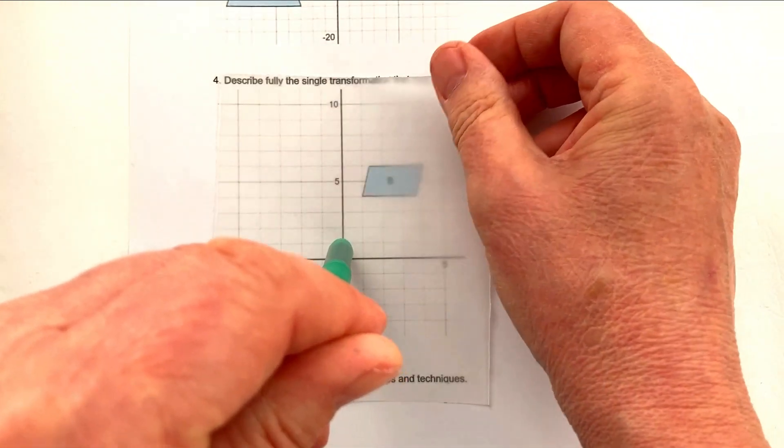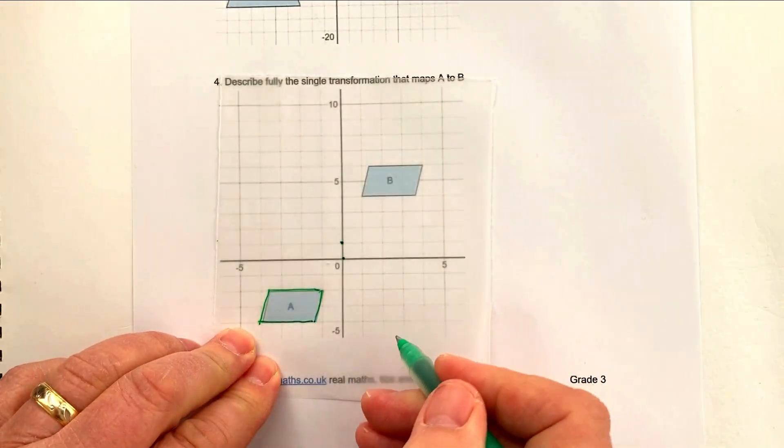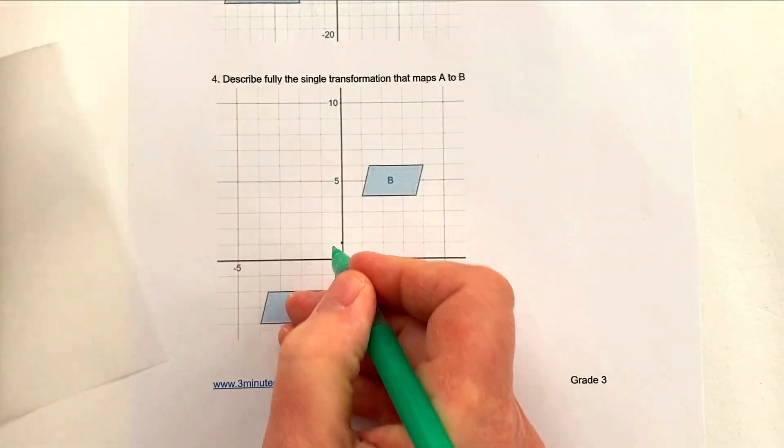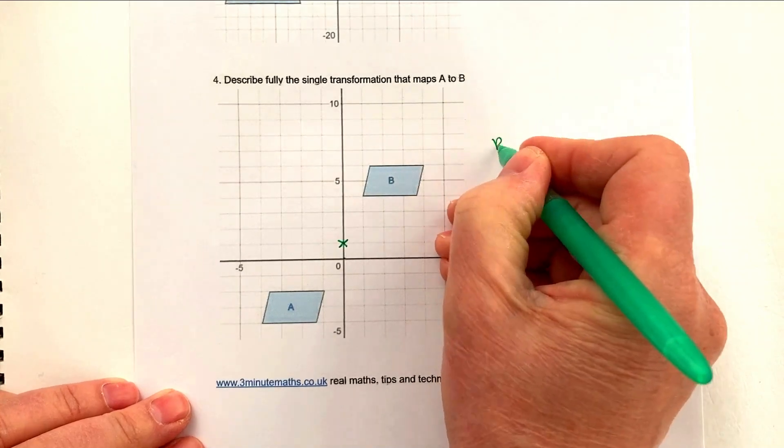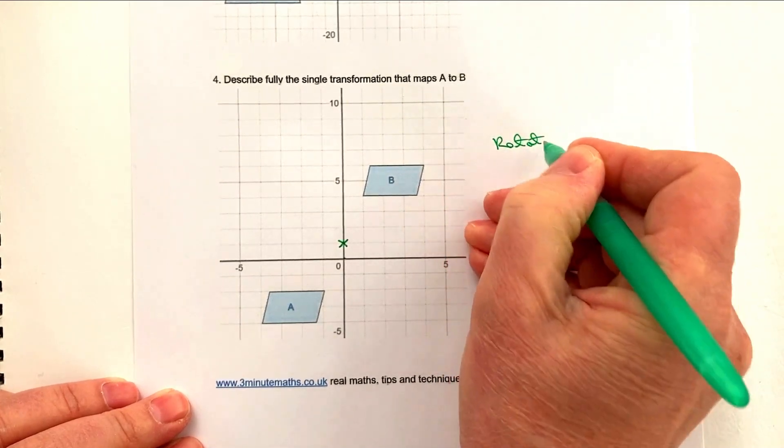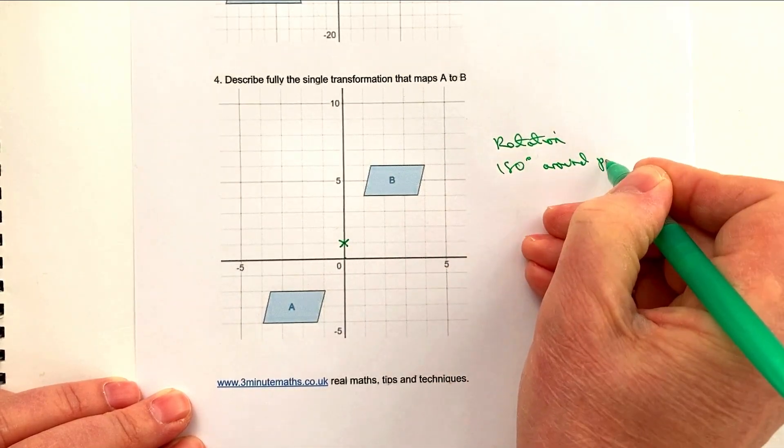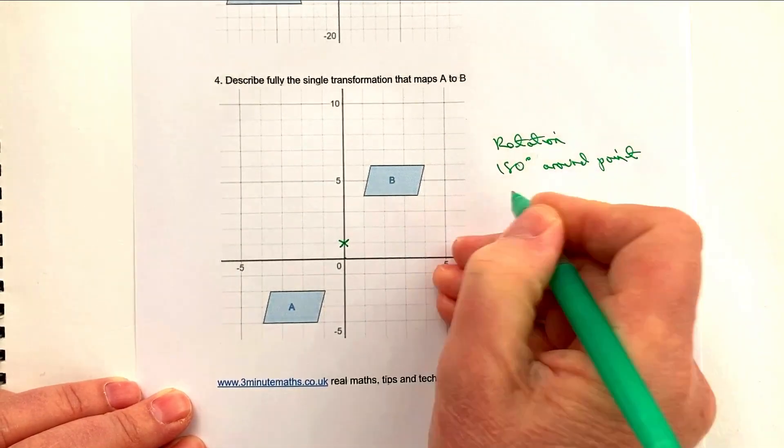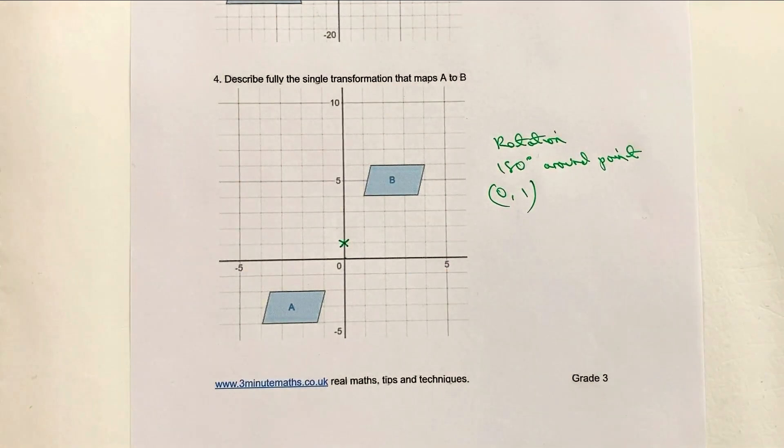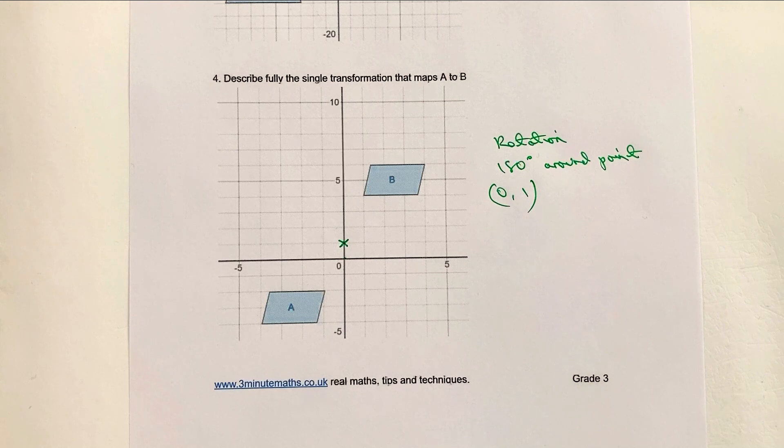So it actually is a rotation of 180 degrees around this particular point, which on the grid is there. So it's a rotation 180 degrees around point (0,1). And that would be the answer to that particular question. So a little bit trickier, particularly when it's on a video, but I hope you've been able to follow it. Please do add a comment below if you're not sure about anything. I'll always come back to you and I'll look forward to seeing you inside the next video.